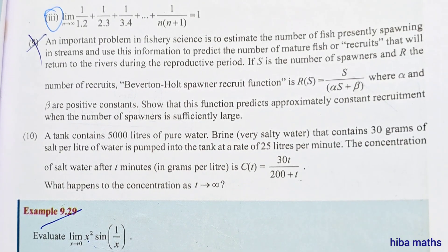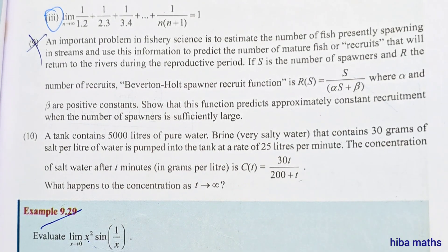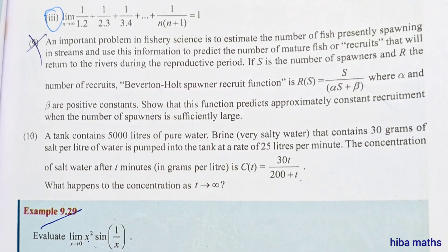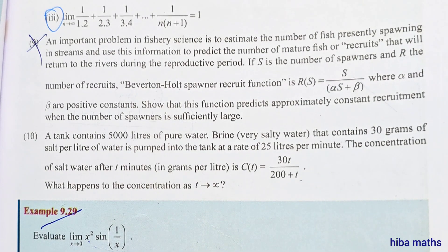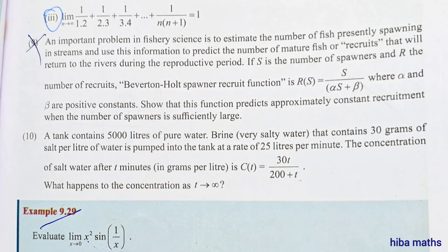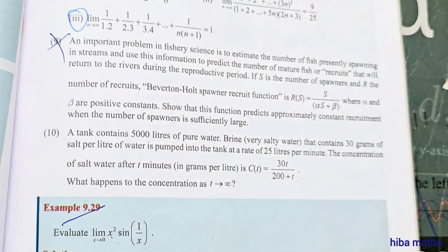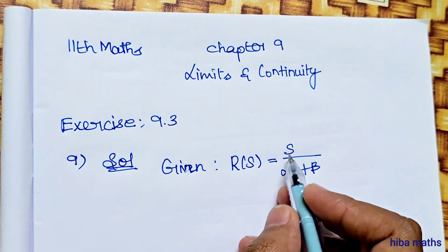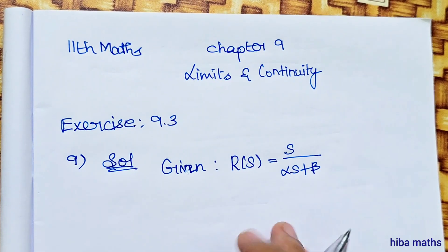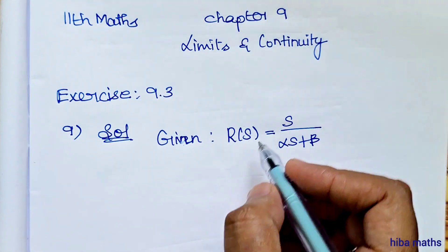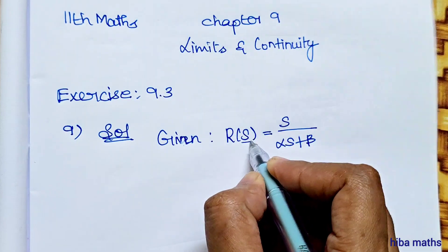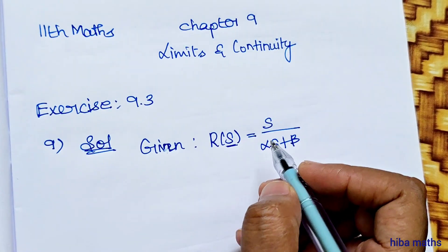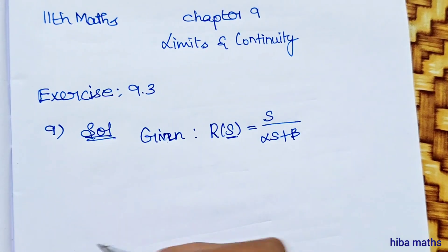We need to show that this function predicts approximately constant recruitment when the number of spawners is sufficiently large — that is, as s approaches infinity. The solution starts with r(s) = s divided by alpha times (s plus beta), where alpha and beta are constants, and spawners are sufficiently large.